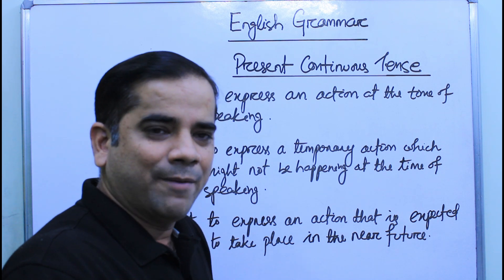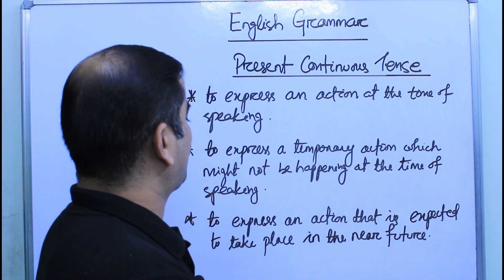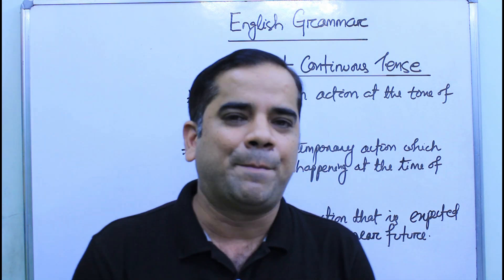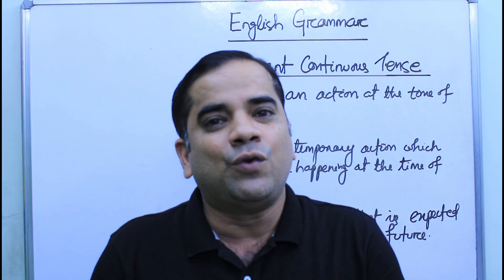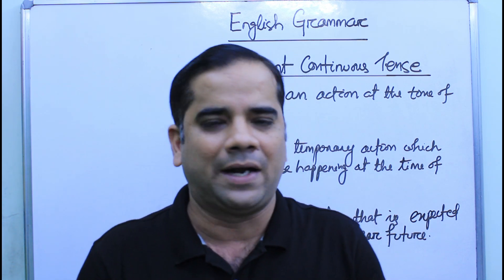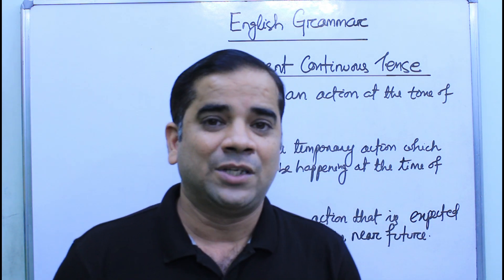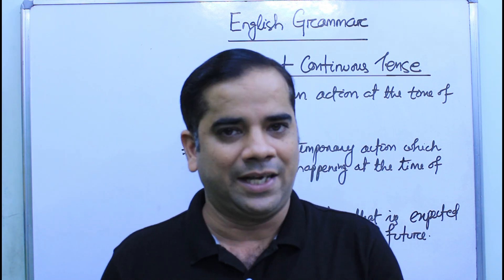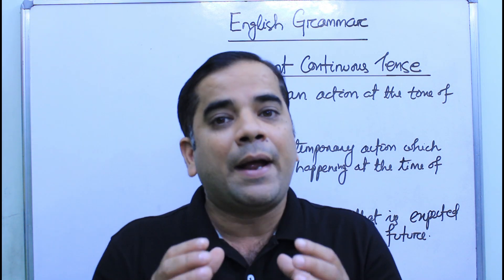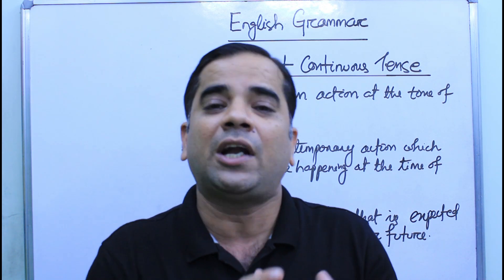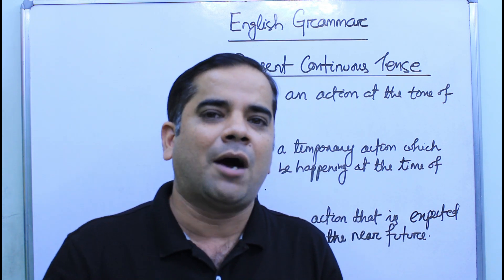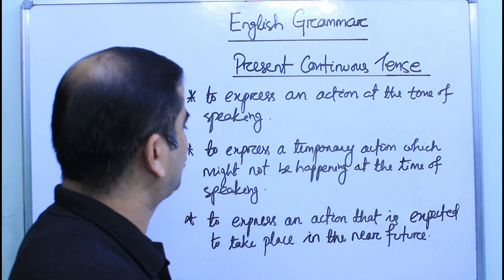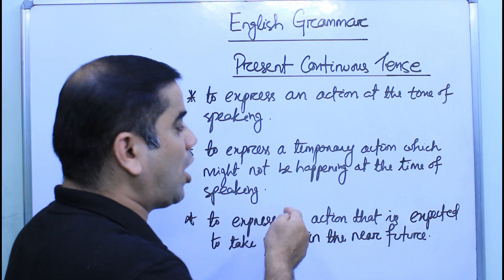Present continuous tense is also used to express a temporary action, which might not be happening at the time of speaking. A temporary action is one which we do for a certain amount of time — it is not permanent. For example, learning singing, learning swimming, or learning how to play a sport. These are things we do for a particular duration, so we use present continuous tense for them.